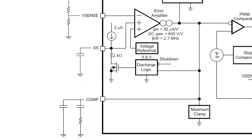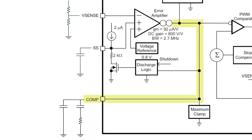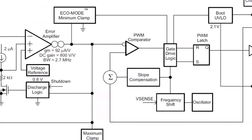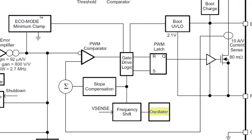The error amplifier is a transconductance amplifier with the output pin accessible so a compensation network can be added. The frequency of the pulse width modulation is set by an internal oscillator with a nominal value of 1 MHz.